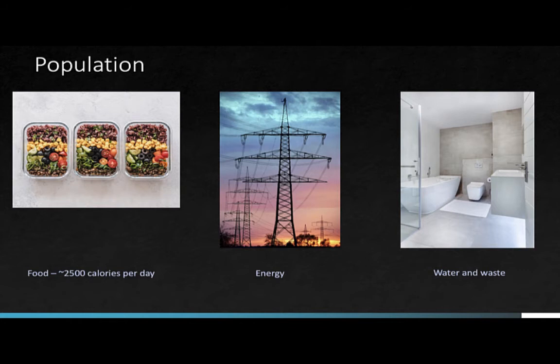Taking these one by one and starting with population, we can see why this is pretty straightforward. On average, every person needs — actually physiologically needs — about 2,500 calories per day, at least for a male. More people means more food, and more food means more impact on environmental systems. And the same basic math works for energy use, and it works for water and waste.